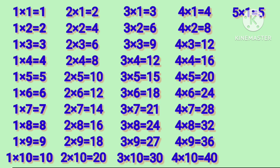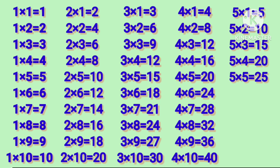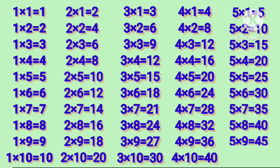5 1's are 5, 5 2's are 10, 5 3's are 15, 5 4's are 20, 5 5's are 25. 5 6's are 30, 5 7's are 35, 5 8's are 40, 5 9's are 45, 5 10's are 50.